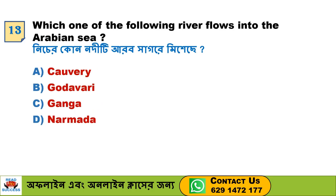Next question: Which one of the following rivers flows into the Arabian Sea? Option A. Kaveri, Option B. Godavari, Option C. Ganga, Option D. Narmada. Option D, Narmada, is the correct answer.